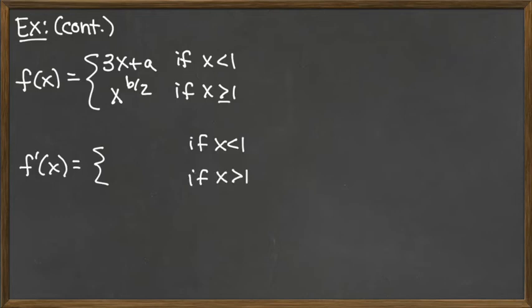So we don't know what's happening at 1 for the derivative, but we can say what's happening to the left of 1 completely. It would be the derivative of the line 3x plus a. Well, the derivative of that line would be the slope 3, because that would be the derivative of the term 3 times x.